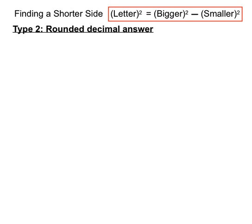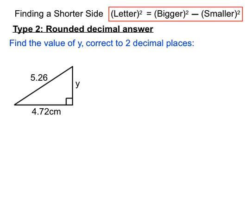We also have questions like when we found the hypotenuse that we're expecting a rounded decimal answer for. So let's have a look at an example of that. Find the value of y correct to two decimal places this time.